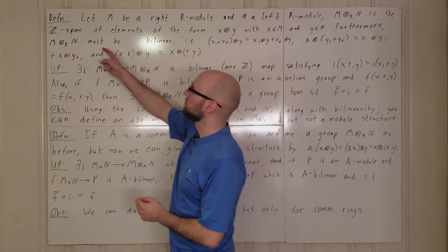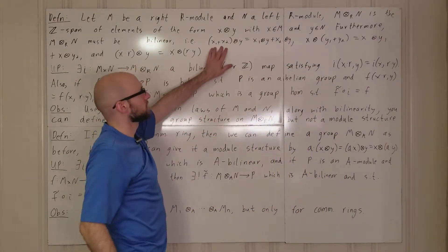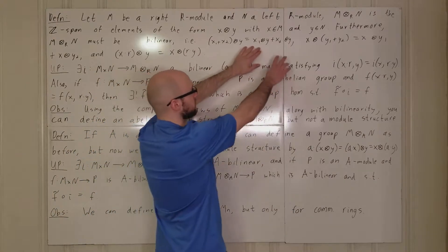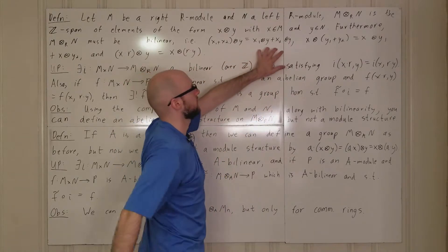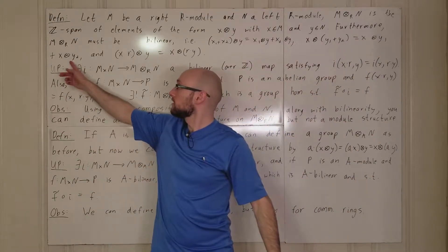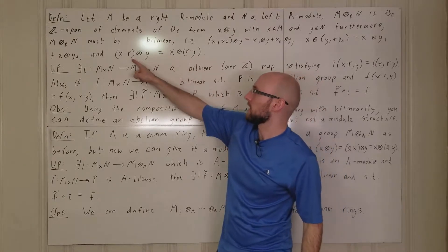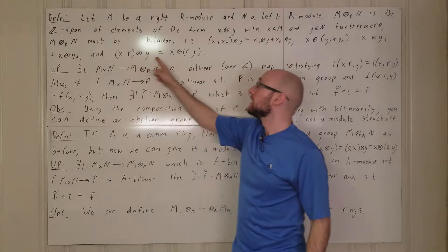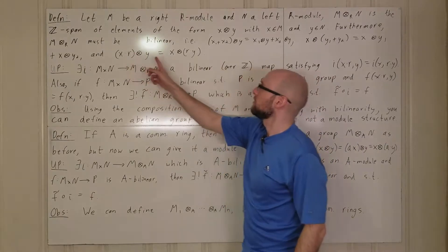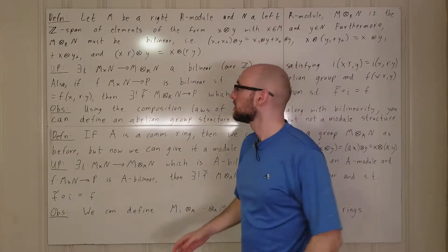The rules of the game: we require this to be bilinear. That means (x₁ + x₂) ⊗ y = x₁ ⊗ y + x₂ ⊗ y — you can break it up in the first coordinate. Similarly in the second coordinate. And if you multiply by r on the right in the first entry, that's the same as multiplying by r on the left in the second entry. So it's important to keep track of which is the right module and which is the left module.